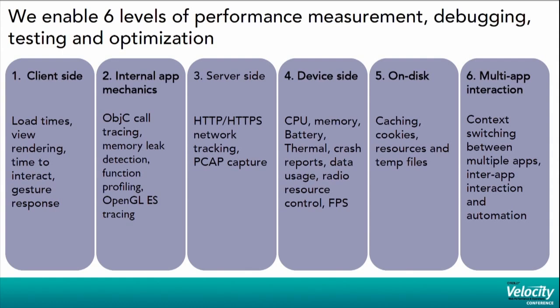Then we have the server side — your HAR and peak APIs — and we do HAR comparisons, the diffs and so on, to tell you how things evolved over time. Then there is the device side: the on-disc and the multi-app interaction. We do this measurement on every app, around the clock, in a continuous manner. You can push your builds through an API and we'll give you the results within a few minutes.